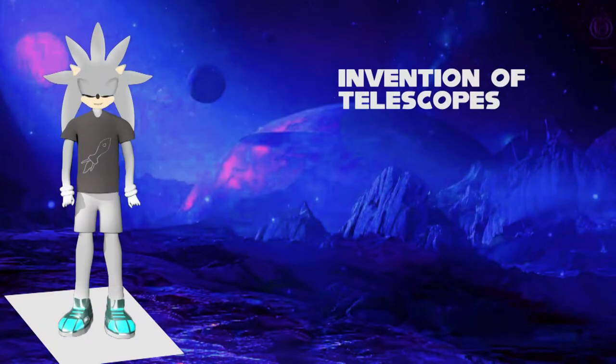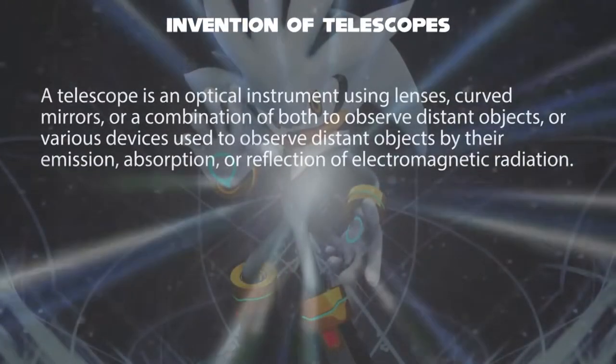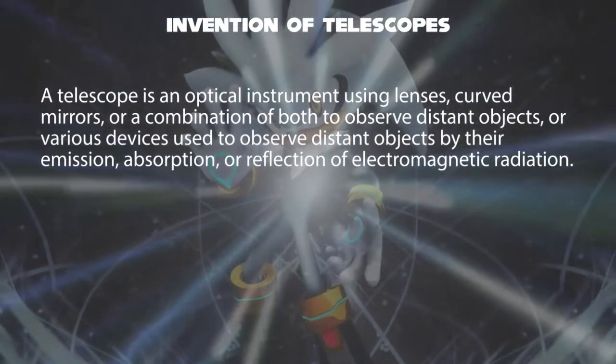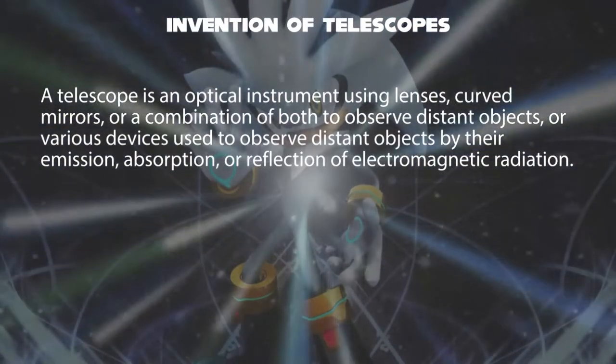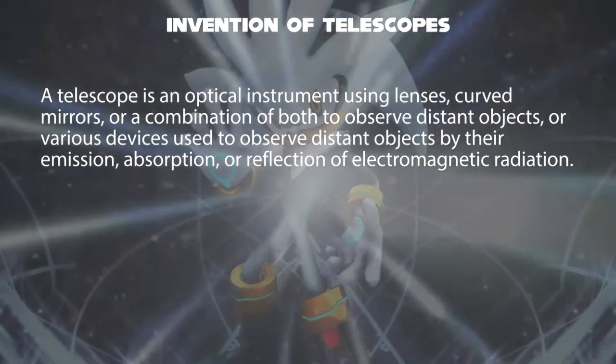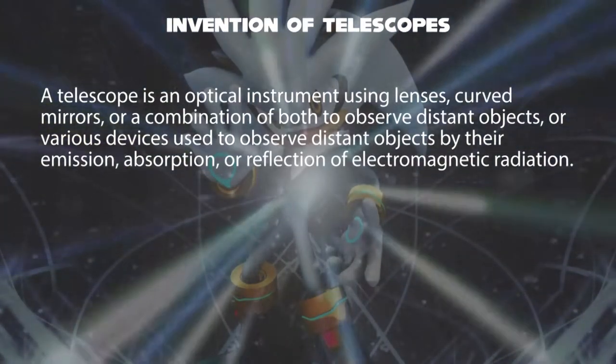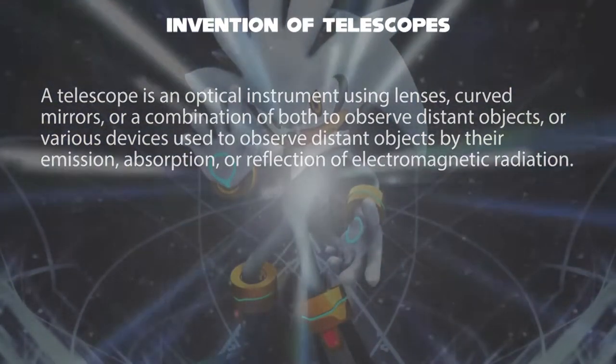Hello, I'm Silver. We will talk about the invention of telescopes. A telescope is an optical instrument using lenses, curved mirrors, or a combination of both to observe distant objects, or various devices used to observe distant objects by their emission, absorption, or reflection of electromagnetic radiation.